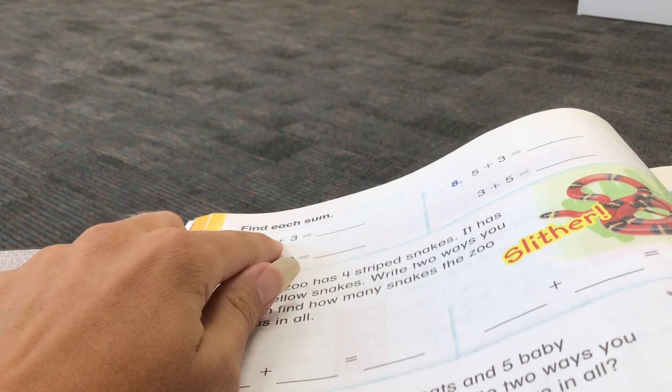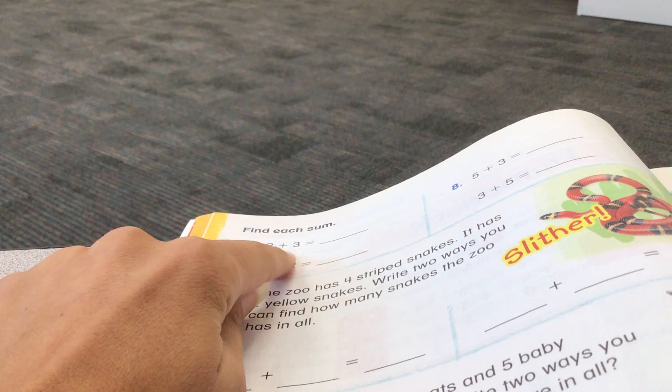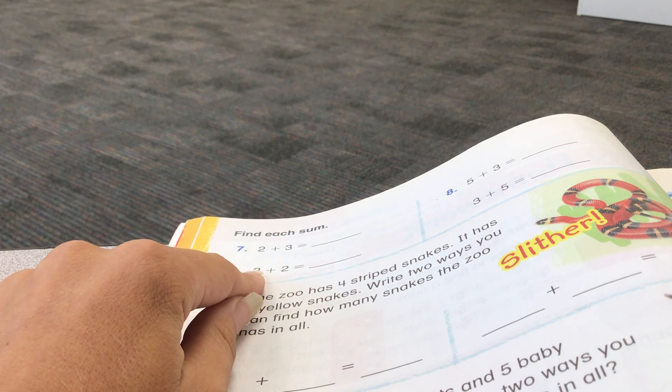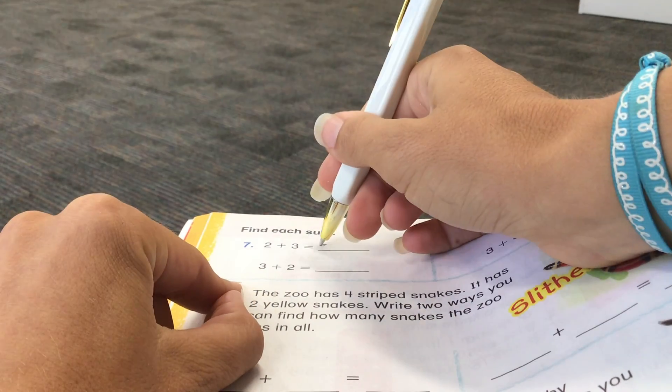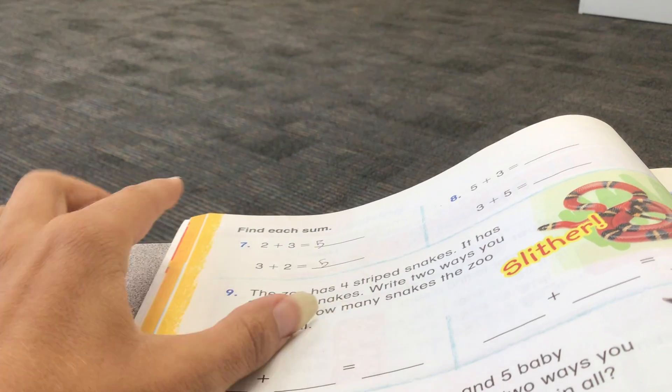Find your sum. 2 plus 3. We'll start with the 3, 4, 5. So the answer will be 5 here. And the answer will be 5 here. If you know one, you know the other.